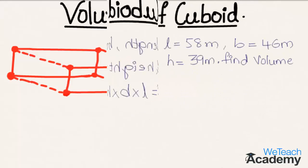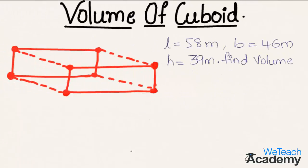Now let us discuss a few examples using this formula. Here the given example is: if length equals 58 meters, breadth equals 46 meters, and height equals 39 meters, then find the volume of such cuboid.